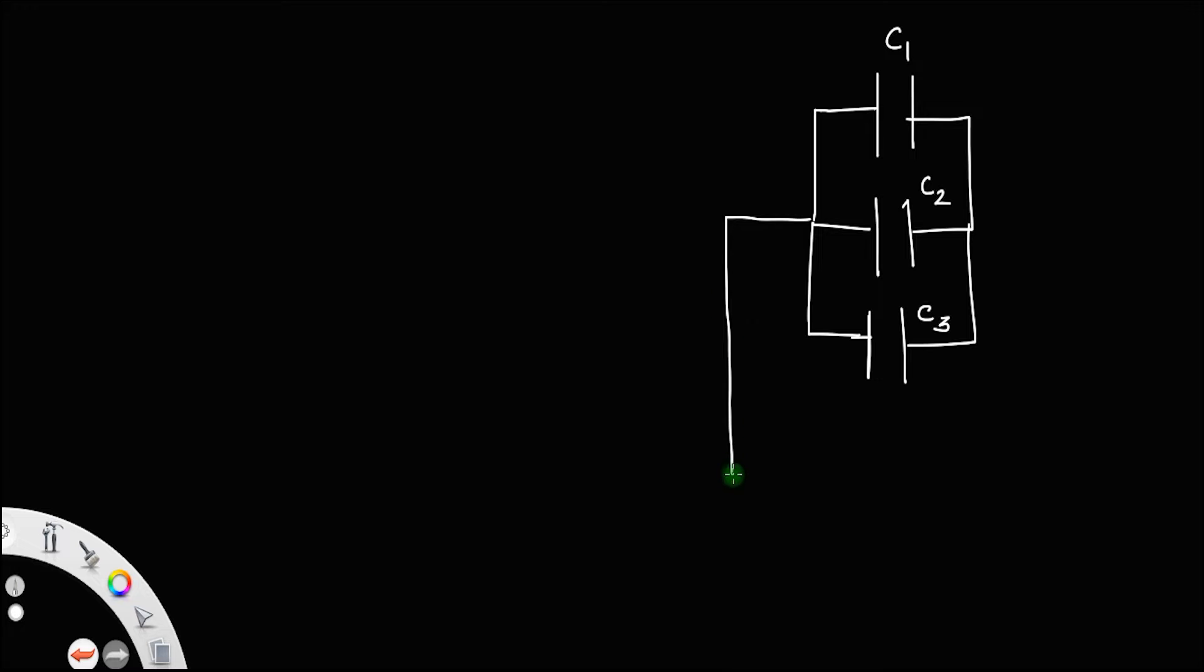These are connected parallely and is connected in between a cell of potential drop V. For convenience, let us name this junction A and this junction B. We connected all these capacitors in between A and B. And you know the fact that this is the positive terminal and this is the negative terminal.